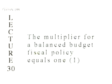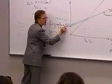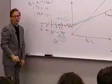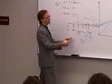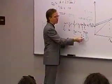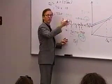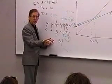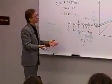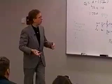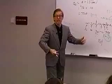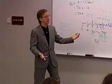When government spending went up by $10, the autonomous spending curve shifted up by $10 — from 72 to 82. When taxes went up by $10, autonomous spending went down by only $9. When the government spent $10, that $10 went directly into total spending — that's the end of the story.